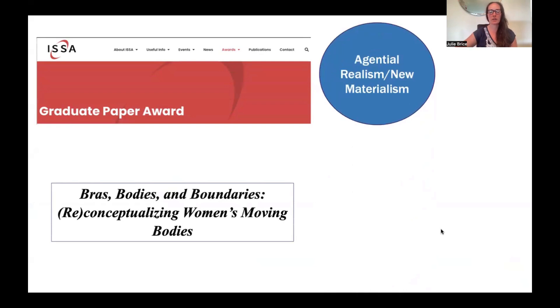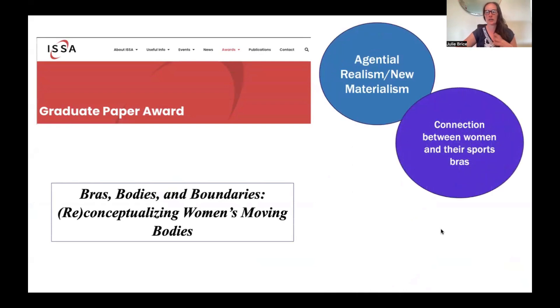Basically, I was using new materialist theory and specifically agential realism to look at the connection between women and their sports bras, and I used that to rethink bodily boundaries. I'll go through the paper really briefly, then talk about what I'm doing now and the future of the theory that I work with. So the first thing we need to know is really briefly what is new materialism and what is agential realism.